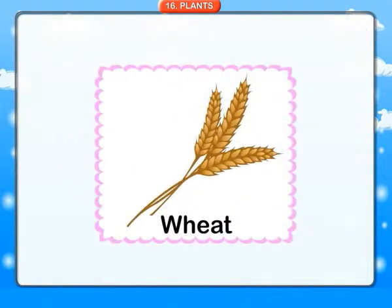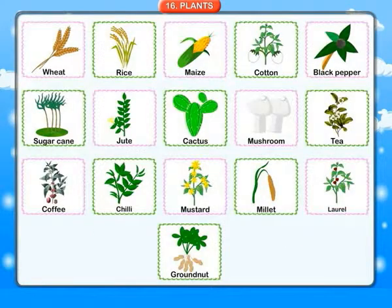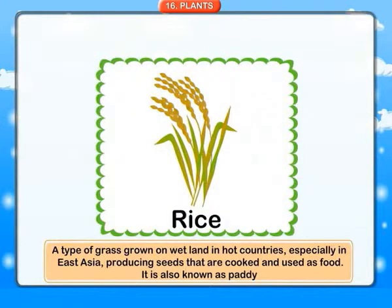Plants. Wheat: this grass-type plant produces edible grains, known as a cereal product. Rice: a type of grass grown on wetland in hot countries, specially in East Asia, producing seeds that are cooked and used as food. It is also known as paddy.